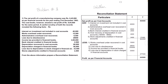Hello friends, welcome to my channel. In today's video I will solve a problem on reconciliation statement. The net profit of a manufacturing company was rupees 6,45,000 as per financial records for the year ending 31st December 1983. The cost books showed a net profit of rupees 8,64,600 for the same period. A careful scrutiny of both records revealed certain facts, and we have to prepare the reconciliation statement.